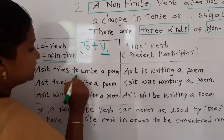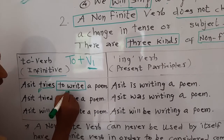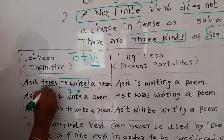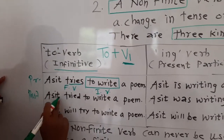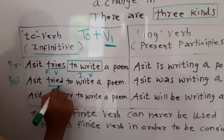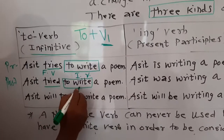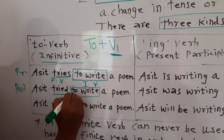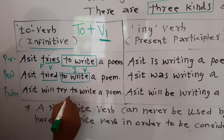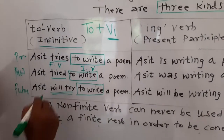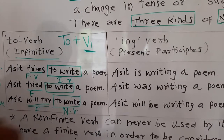For example: 'Asif tries to write.' Here 'tries' is the main verb — that is the finite verb — and 'to write' is the non-finite verb, the infinitive, with no change. In past tense: 'Asif tried to write' — 'tried' changes but 'to write' stays the same; no 'to wrote.' In future tense: 'Asif will try to write' — again 'to write' is unchanged. So 'to + V1' is always the infinitive, regardless of tense.